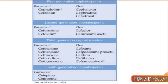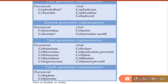Cephalosporins are divided into four generations. How will you identify which drug belongs to which generation? It is very easy. In the fourth generation, whenever there is 'PI' — PI is your code word. If there is a PI, it belongs to the fourth generation. For example: cefepime, cefepirone — both are fourth generation.